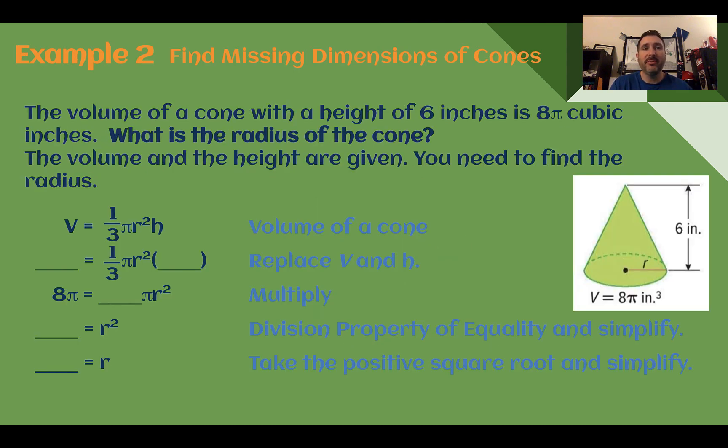Example 2. Find missing dimensions of cones. The volume of a cone with a height of 6 inches is 8π cubic inches. What's the radius of the cone? So again, we're given the volume and our height, both in the problem and in the picture. We're going to solve it similar to how we just did with a cylinder.